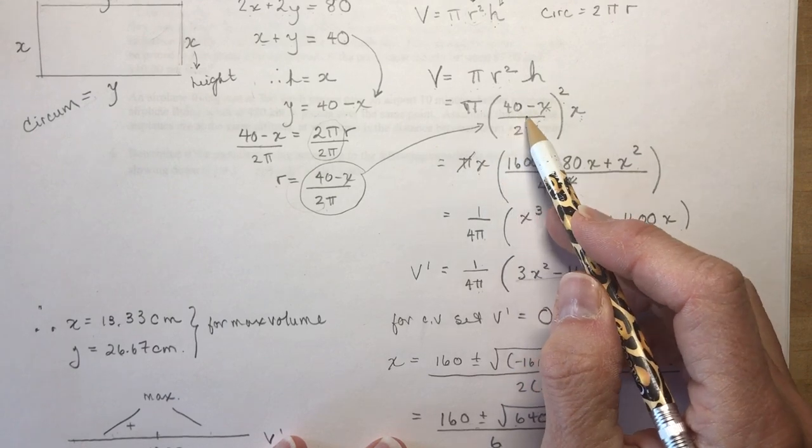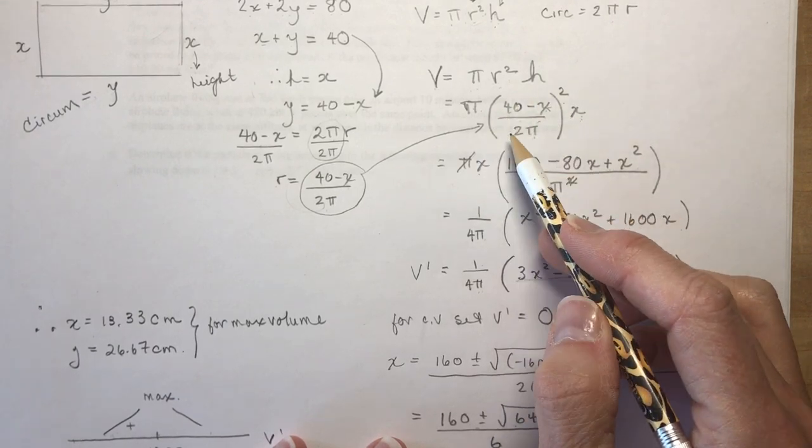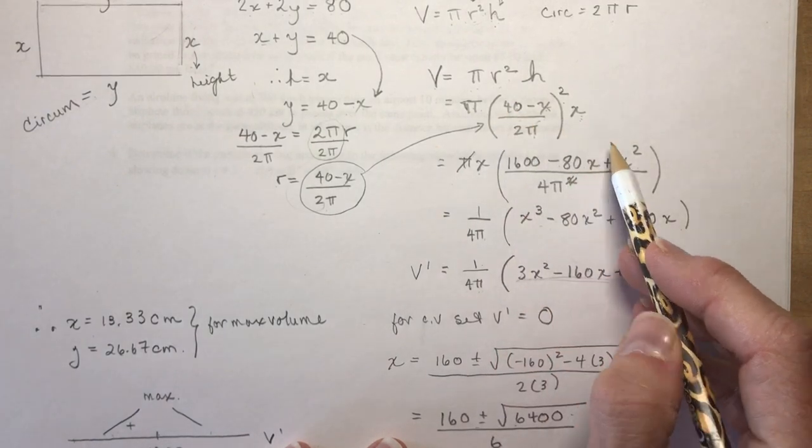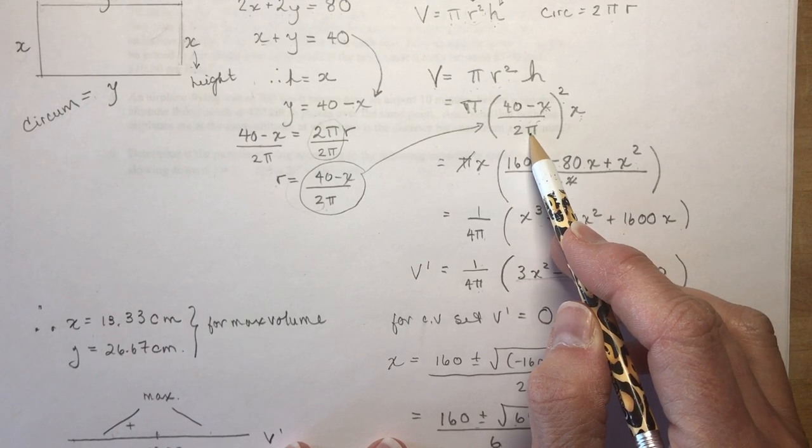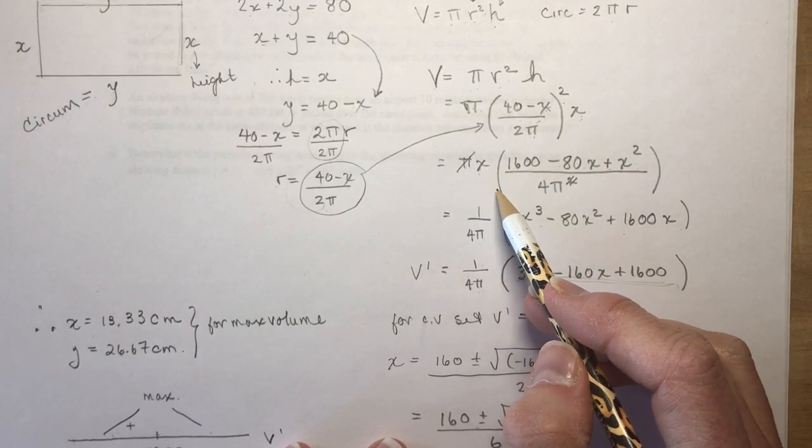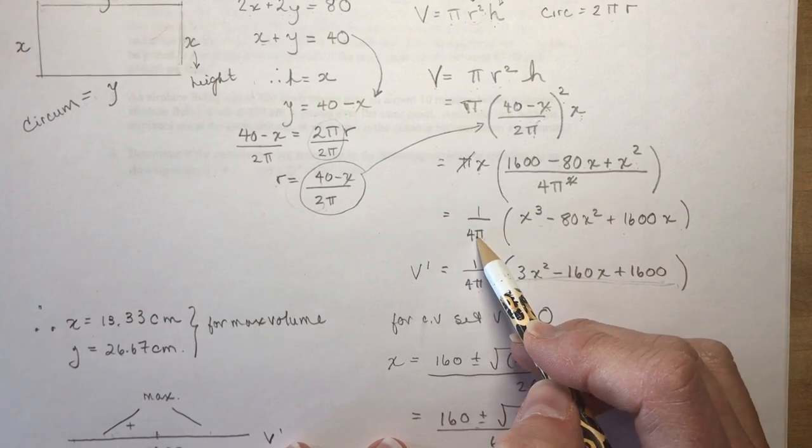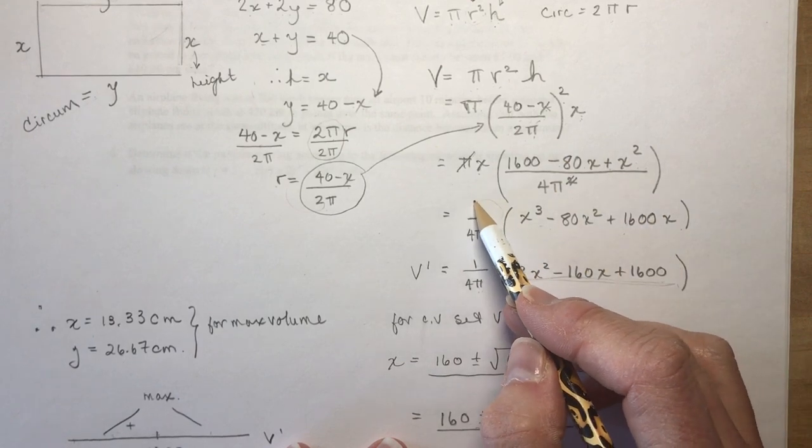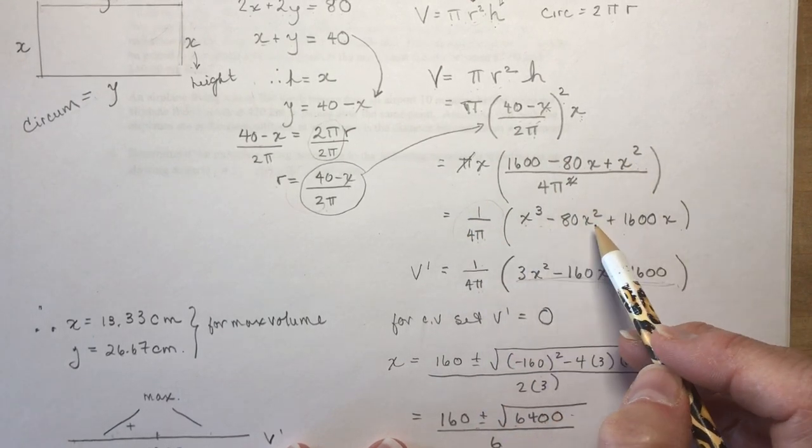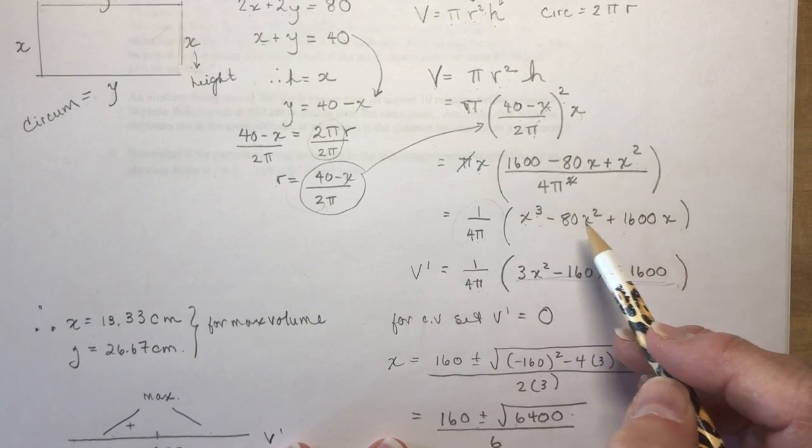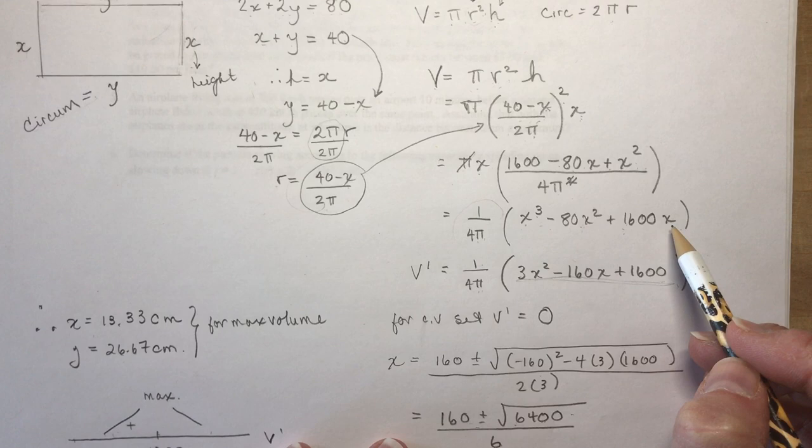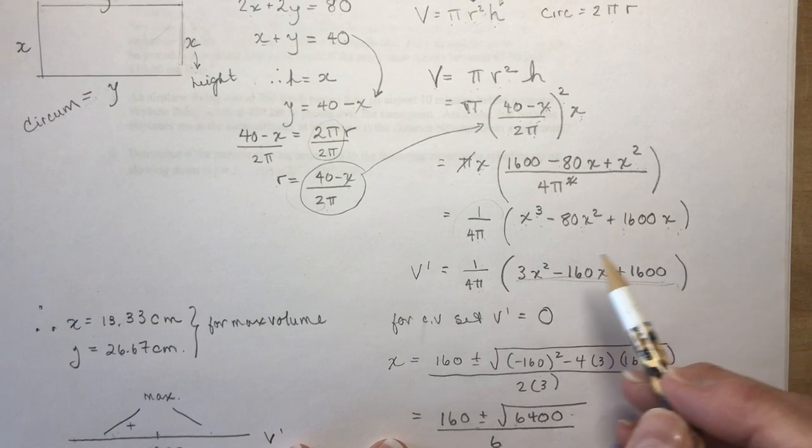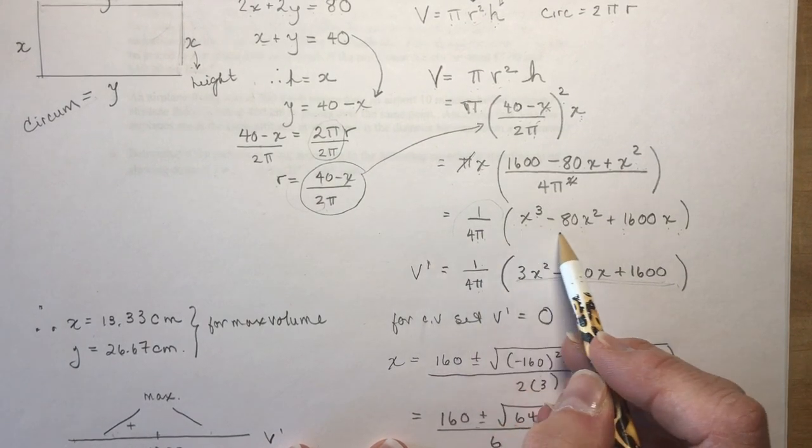Once I've multiplied, I got πX here, and I have to square everything in this bracket here. So I did: square 1600, twice the product, and squared the X, and divided by 4π². So I brought the 1/(4π) out front, and then I expanded this X into what was in the brackets. I just took the constant out front and I've made this X² - 80X² - sorry, X³ - 80X² + 1600X. So now I have volume, this is the volume.